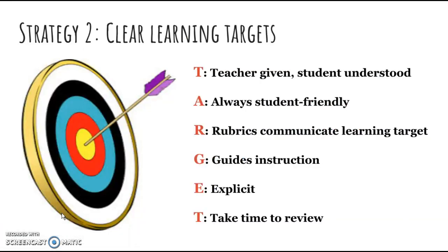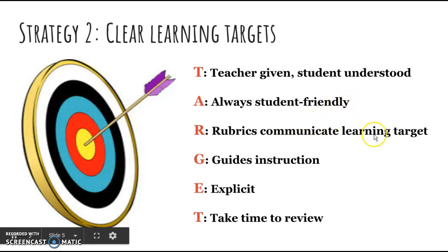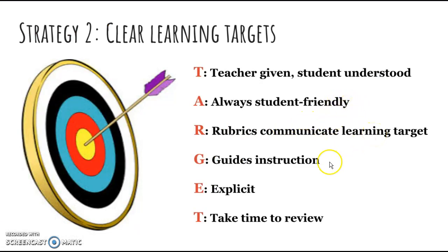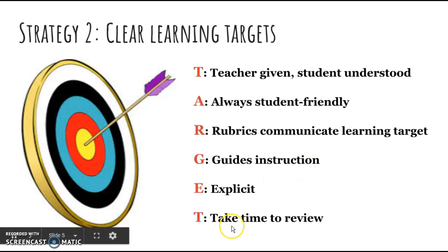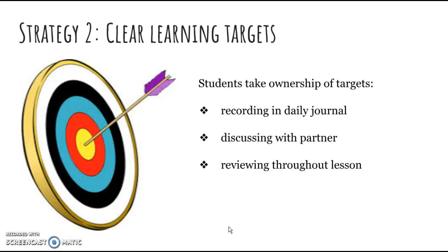Clear learning targets are teacher given, student understood, always student friendly. Rubrics communicate learning targets and guide instruction. They're explicit and we must make sure to take time to review them. Students can take ownership of their targets by recording them in daily journals, discussing with a partner, or reviewing throughout their lesson.